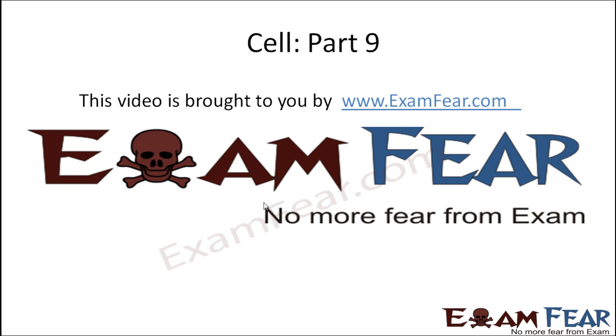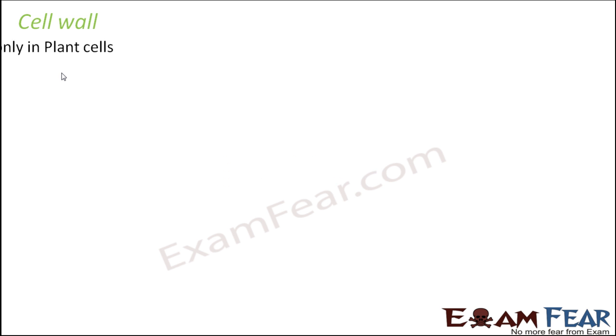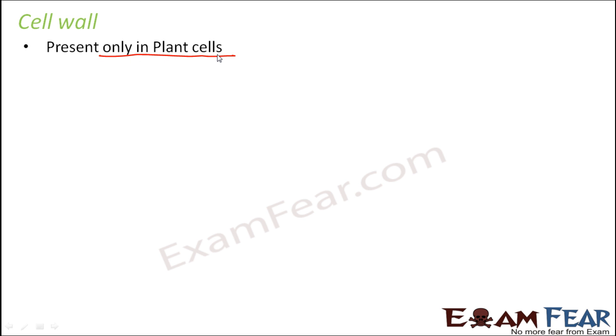Hello friends, this video on cell part 9 is brought to you by examfew.com. Now we will talk about the next important component of a cell — the cell wall. As I had mentioned before, cell wall is present only in plant cells. Animal cells have only one boundary, that is cell membrane. Plant cells have cell membrane, but outside cell membrane they have a cell wall also.